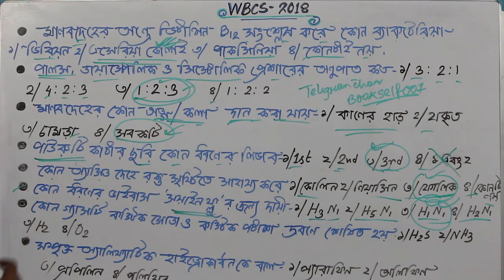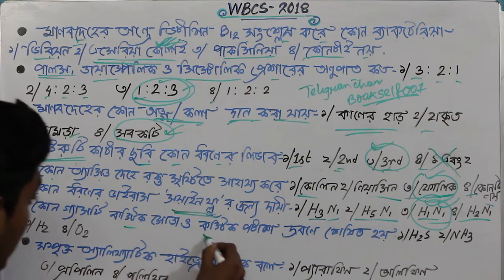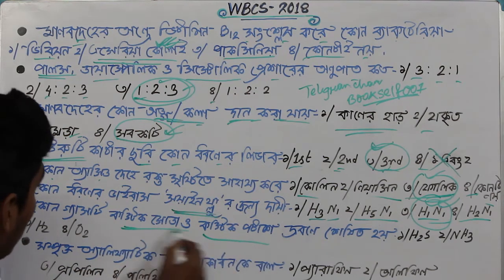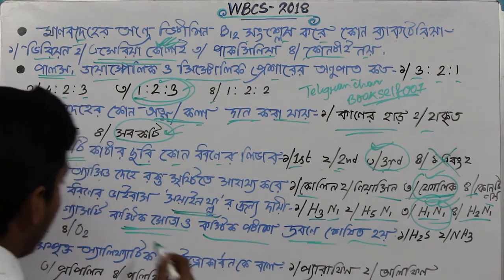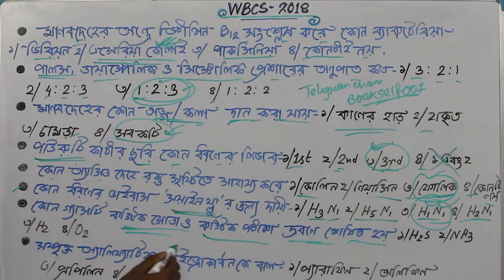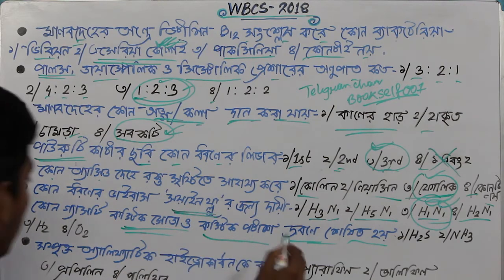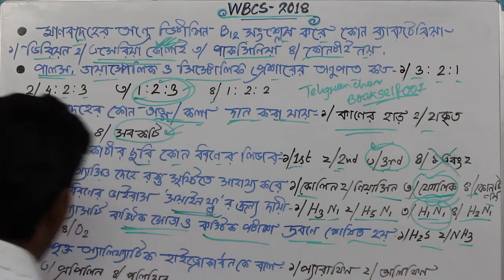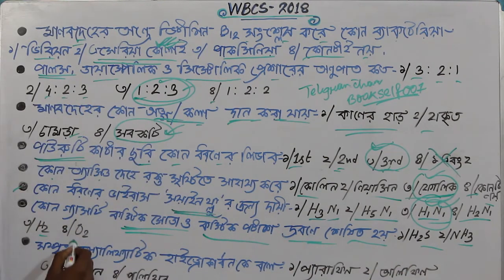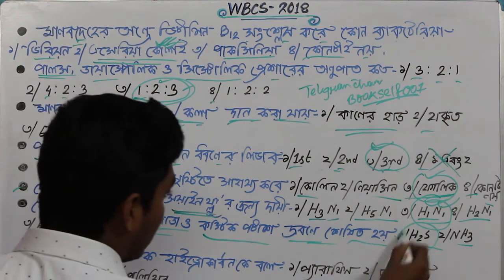Next question: which gas reacts with caustic soda or caustic potassium? The options are H2S, ammonia, hydrogen, and oxygen. The answer is H2S.